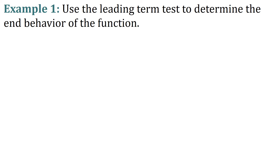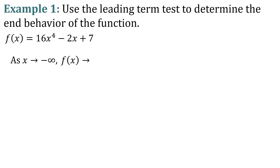We're going to use the leading term test to determine the end behavior of f of x equals 16x to the fourth minus 2x plus 7. We state end behavior as: as x approaches negative infinity, f of x approaches — and we decide if it goes to infinity or negative infinity. On the left-hand side of the graph, does the end behavior go up or down? Same idea on the right: as x approaches infinity, does it end going up or down? If it ends going up, it's positive infinity; if down, negative infinity.